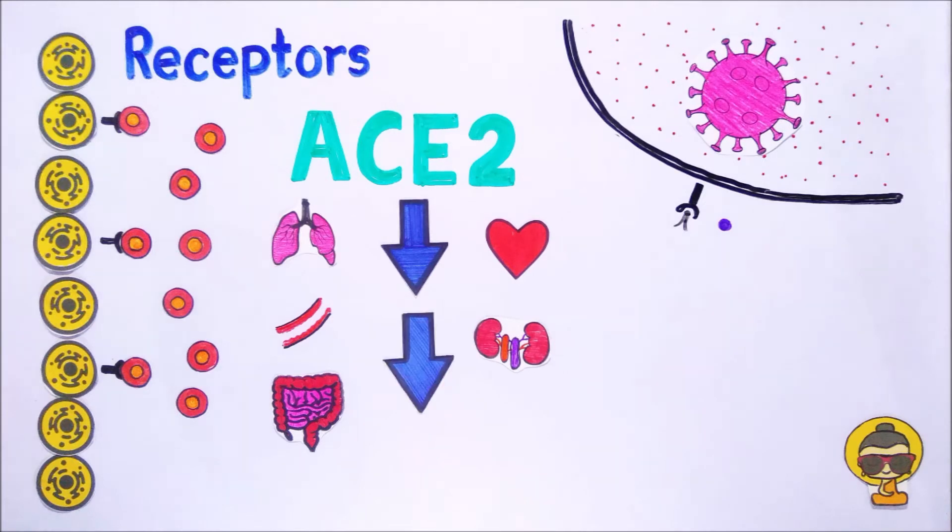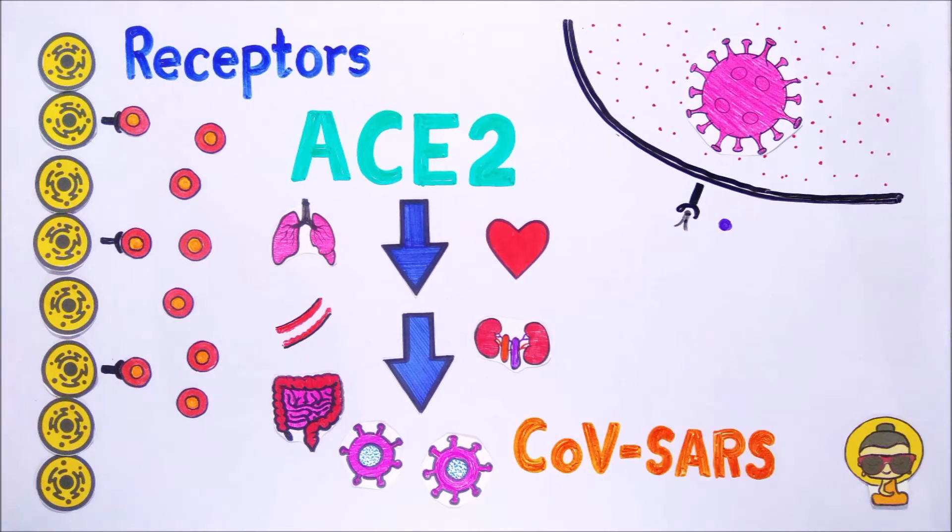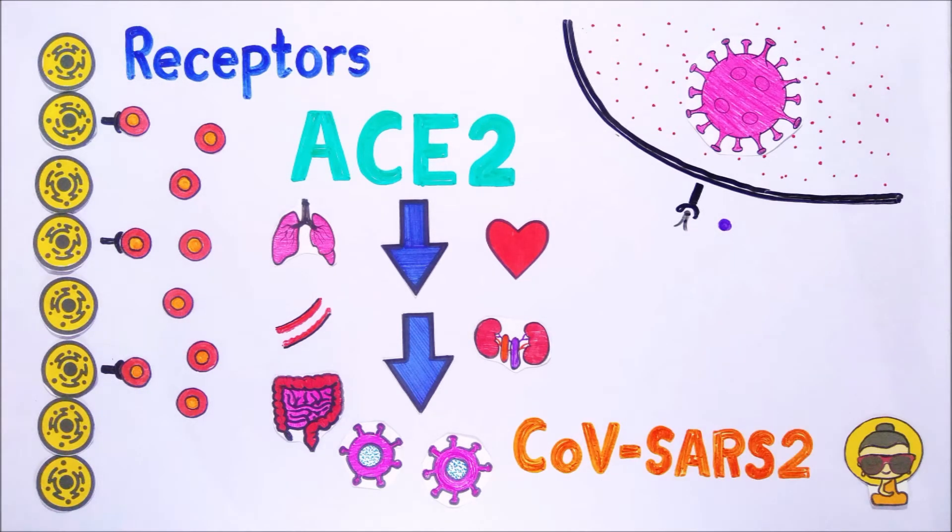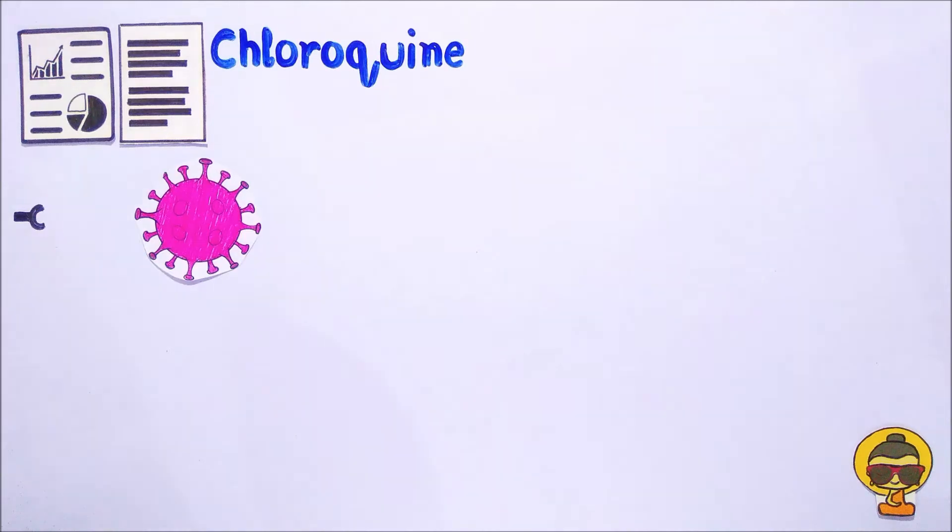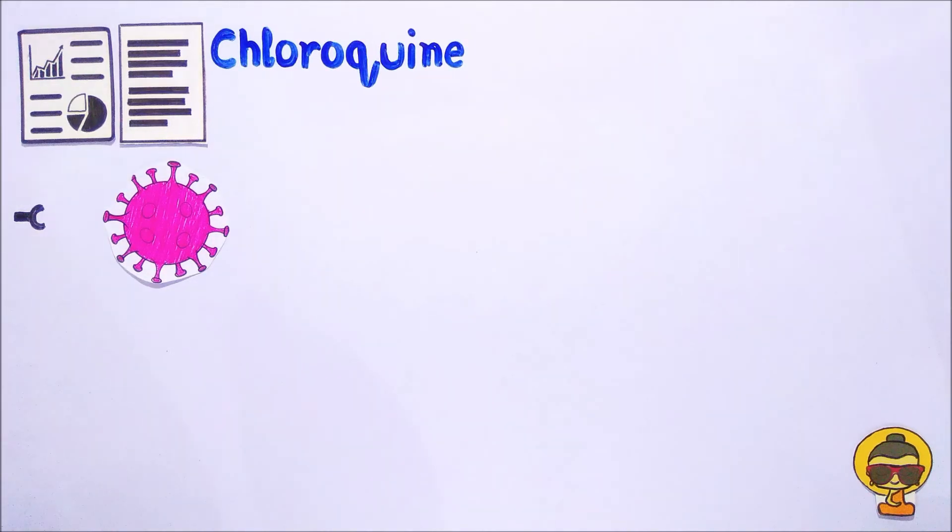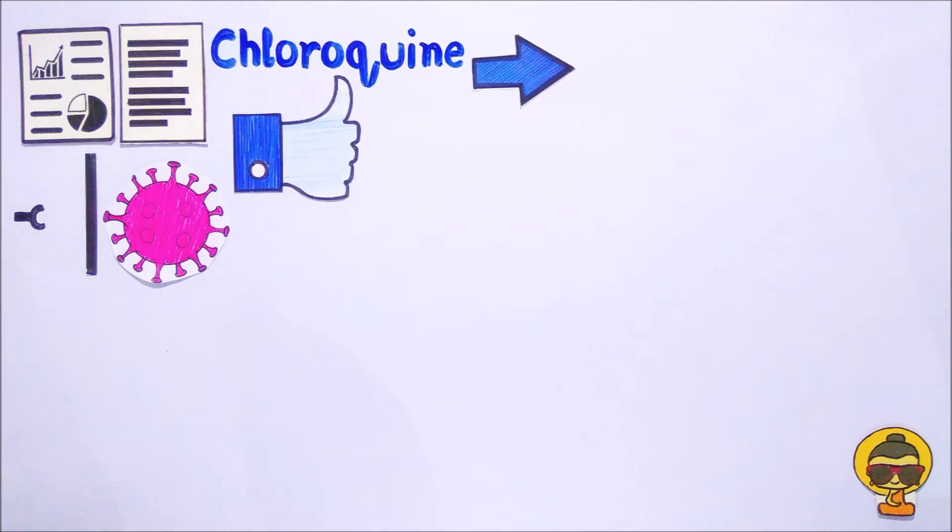ACE2 receptors are the same receptors which were previously used by the virus of SARS to enter the cell. This is the reason why COVID-19 is also known as SARS-2. A study on SARS virus during 2005 found that the medicine of malaria known as chloroquine inhibits the process of coronavirus getting attached to ACE2 receptors. Thus, it reduces the chances of virus getting into the cell and works as a good preventive medicine.